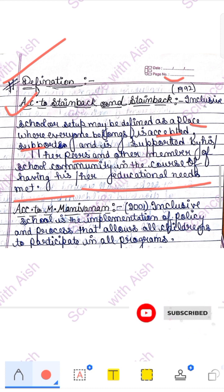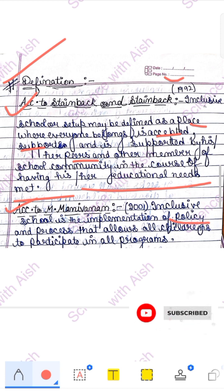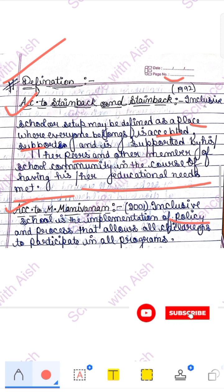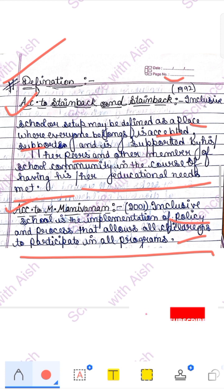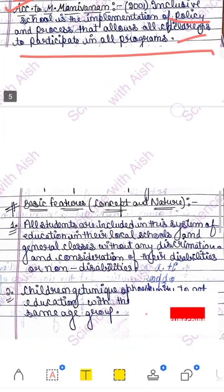According to M. Manyvenan, an inclusive school is the implementation of a policy and a process that allows every child to participate in every program. I hope this is clear.